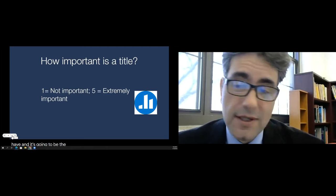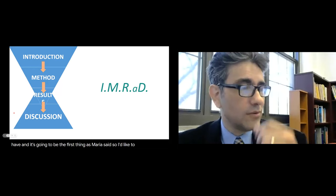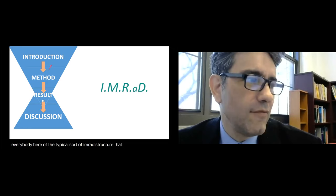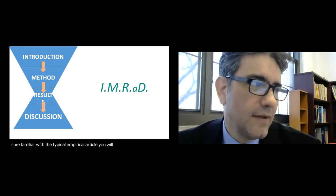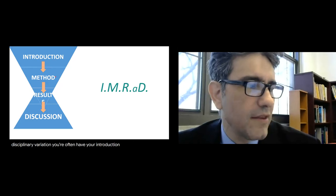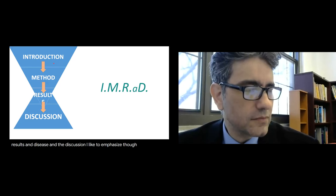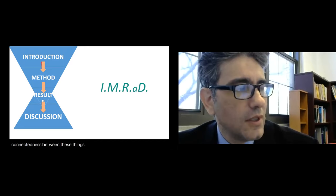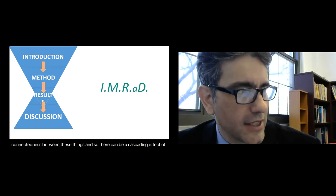I'd like to remind everyone of the typical MRAD structure that everybody is familiar with. In the typical empirical article you'll have — with some disciplinary variation — an introduction, methods, results, and discussion. I like to emphasize that there is an interconnectedness between these things, and there can be a cascading effect of setting reader expectations, setting up your introduction, introducing key variables, which you then pick up in the method and so on.